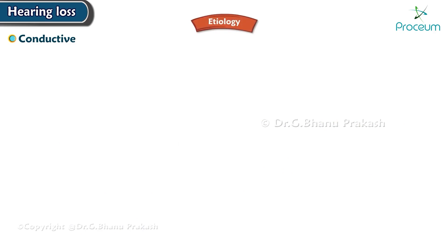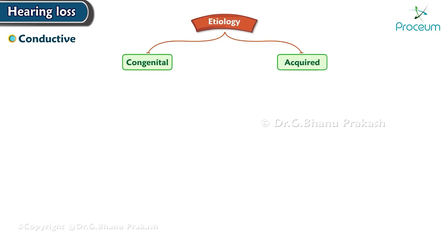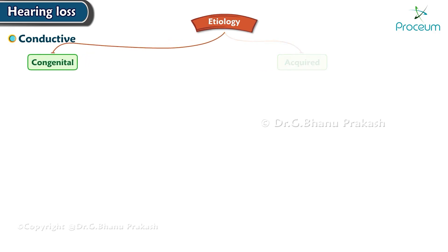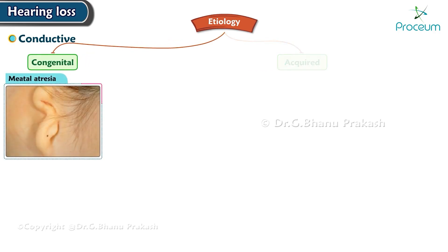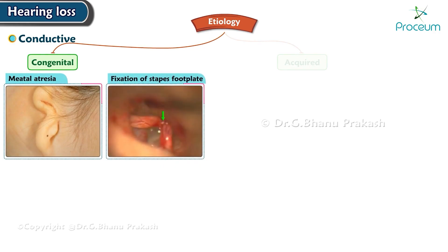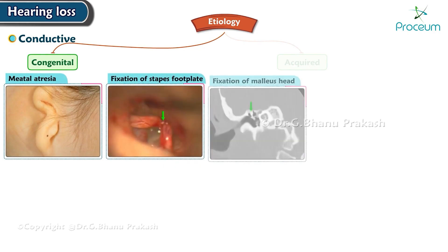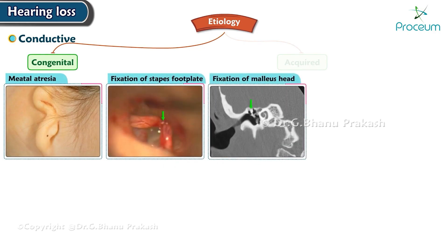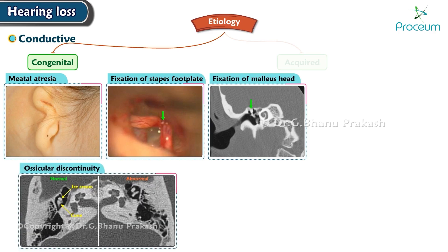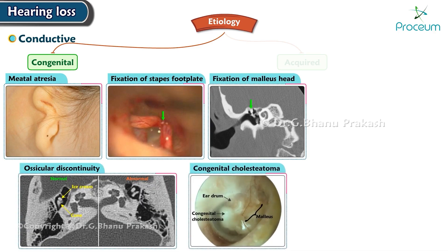The etiology may be congenital or acquired. Congenital causes include meatal atresia, fixation of the stapes footplate, fixation of the malleus head, ossicular discontinuity, and congenital cholesteatoma.